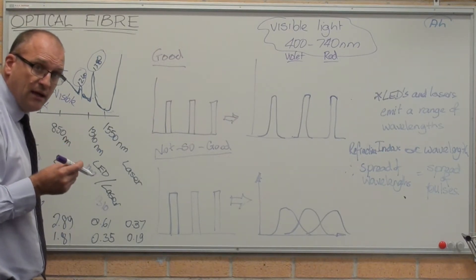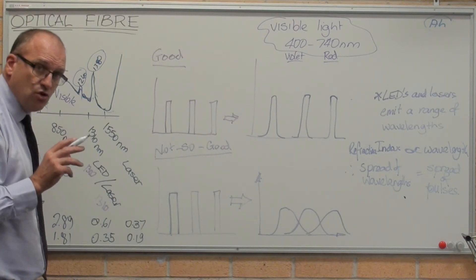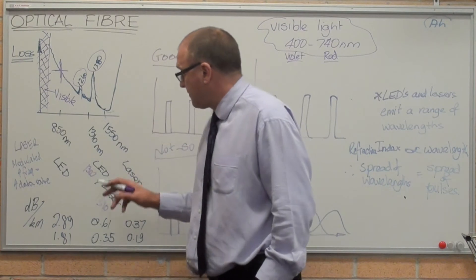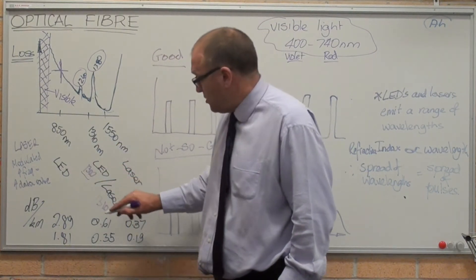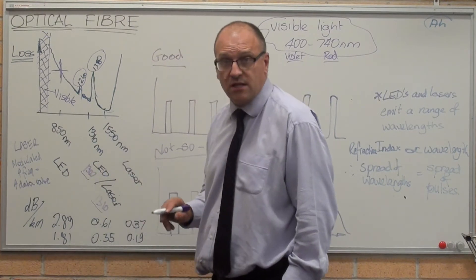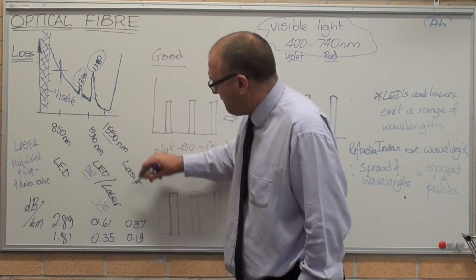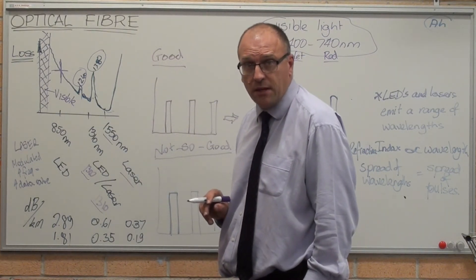The two most effective means of transmission are 1300 nanometers produced by an LED or 1310 produced by a particular type of laser. 1550 nanometers is also produced by a laser, which produces a focused beam.